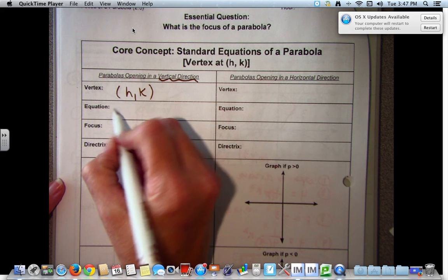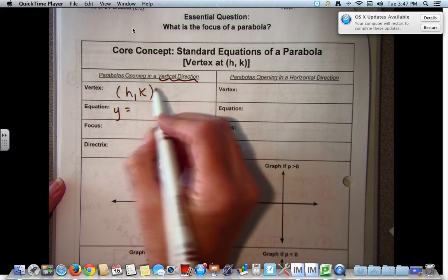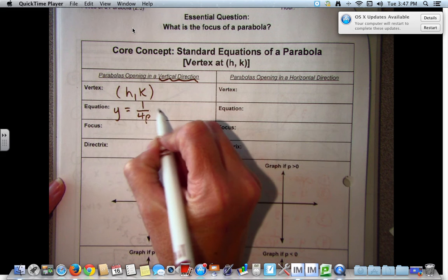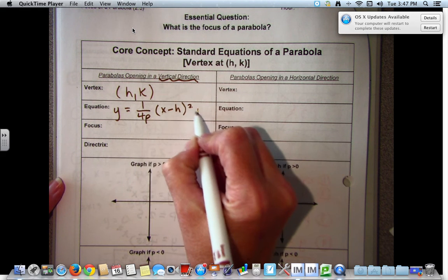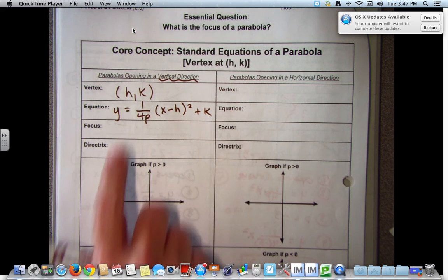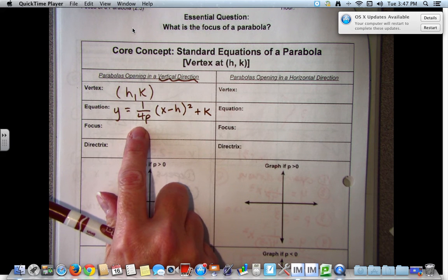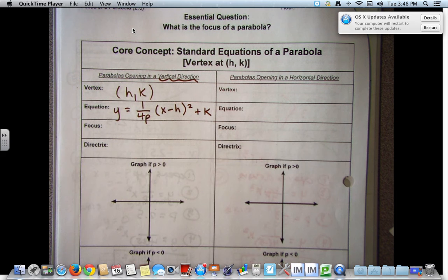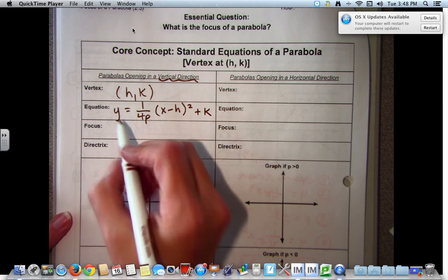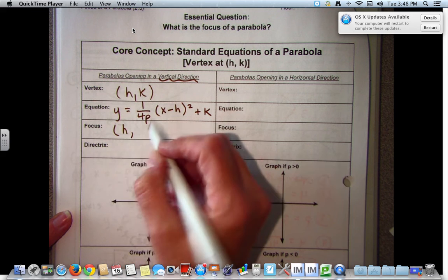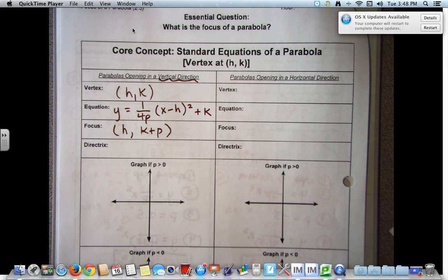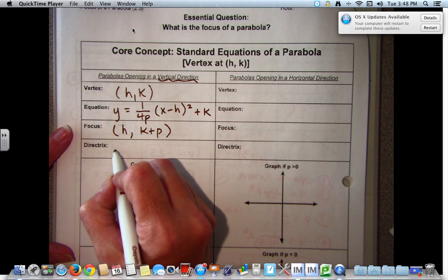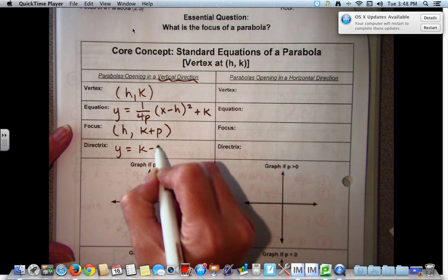Our equation is y equals 1 over 4p times the quantity x minus h squared plus k. We're using what we worked with yesterday, the 1 over 4p, we're throwing in our h and k. Our focus is going to be at h, k plus p. Directrix is opposite direction of the focus and it is y equals k minus p.